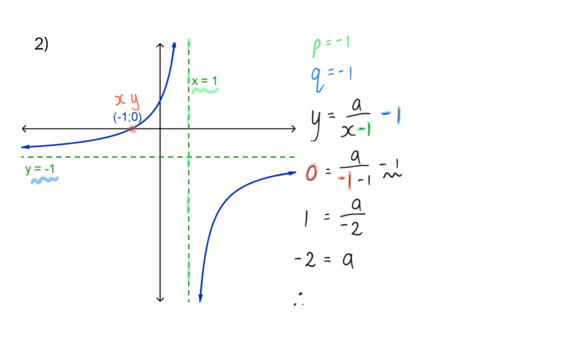So, the final equation will be y is equal to minus 2 over x minus 1, minus 1.